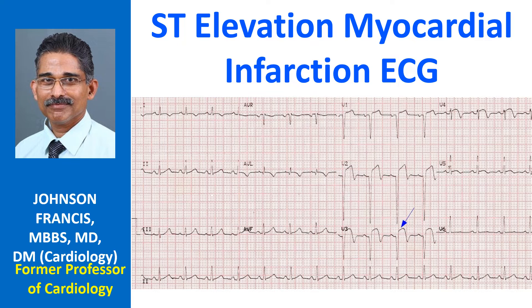ECG shows ST elevation myocardial infarction of the anterior wall. Up-sloping elevation of the ST segment is seen in leads V1 to V5, with maximum ST elevation in V2, which is characteristic of anterior wall infarction.